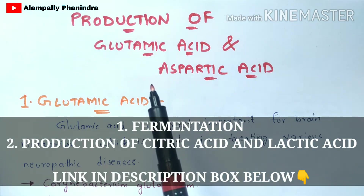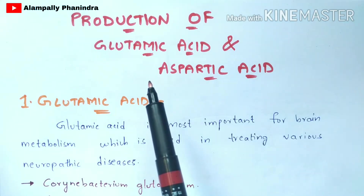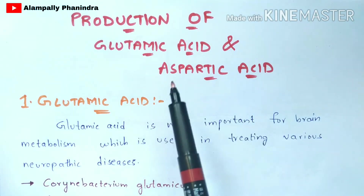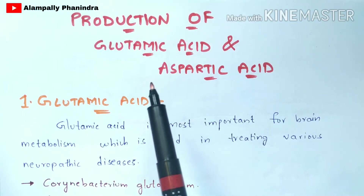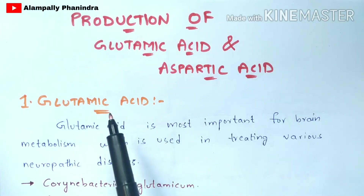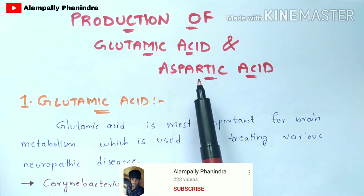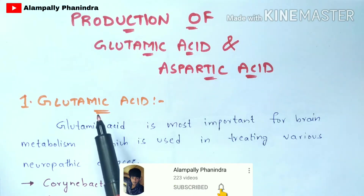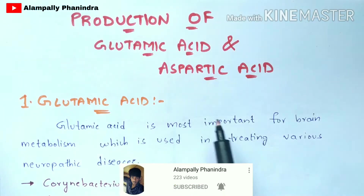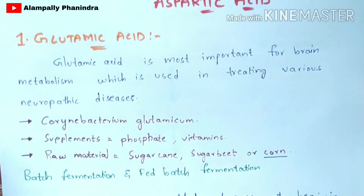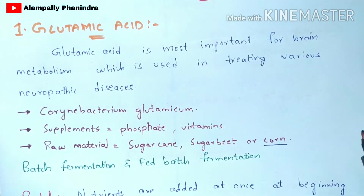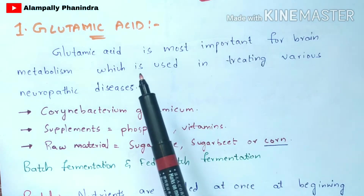The link for those videos will be given in the description box. If you watch the fermentation process video, you can understand how the production of glutamic acid as well as aspartic acid is done. Now let us discuss glutamic acid first. Glutamic acid is most important for brain metabolism and is used in treating various neuropathic diseases.